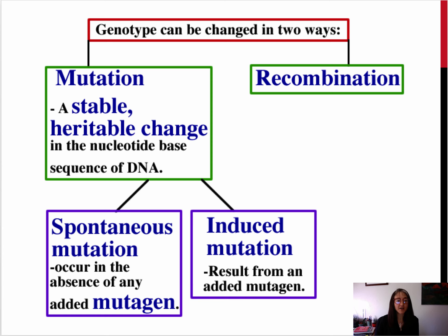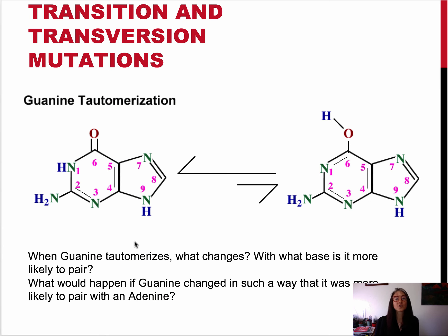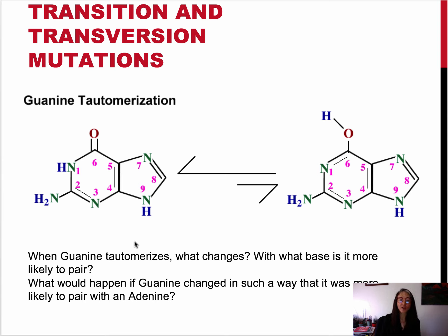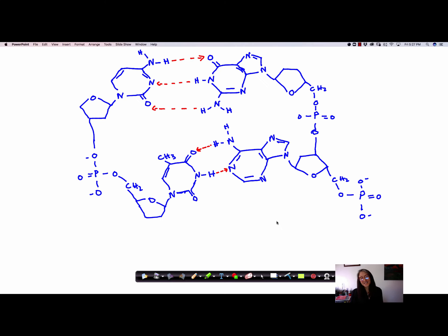Now we can see two different types of mutation: these can be transition or transversion mutations. In the pre-class activity, you were asked to think about the base pairing rules, and hopefully you drew what it looks like when guanine pairs with cytosine or when adenine pairs with thymine. This is a drawing I've done on my Ink2Go program, and what I'm hoping you're seeing is the nature of the hydrogen bonds between G and C and A and T.